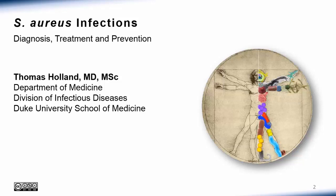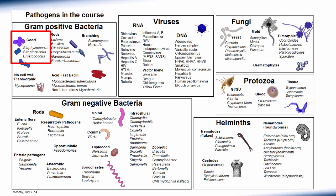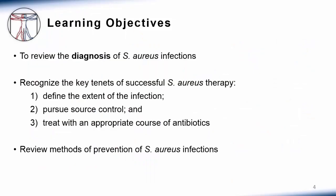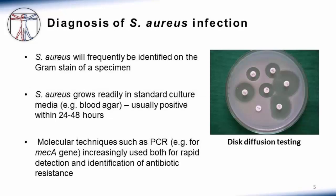In this talk I'll discuss staph aureus infections and their diagnosis, treatment, and prevention. The pathogen map shows we're still in the upper left hand corner talking about staphylococci. I want to review how staph aureus infections are diagnosed, then recognize the key cornerstones of successful staph aureus therapy: define the extent of infection, pursue source control, treat with appropriate antibiotics, and briefly review prevention methods.